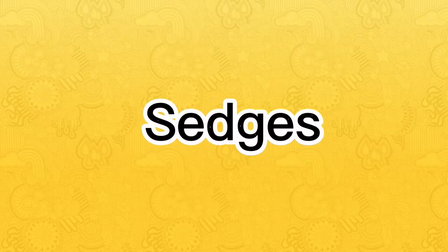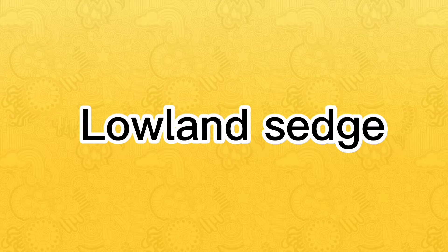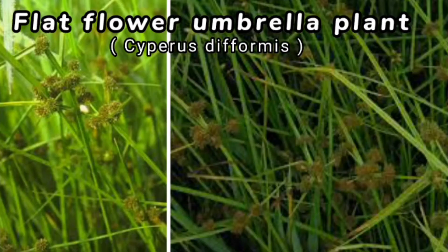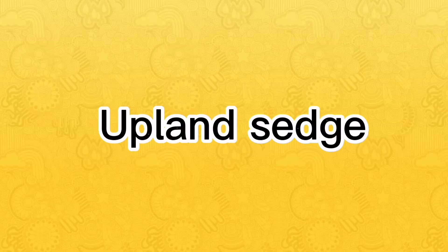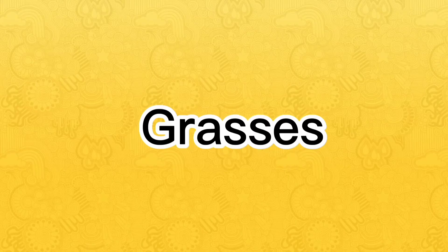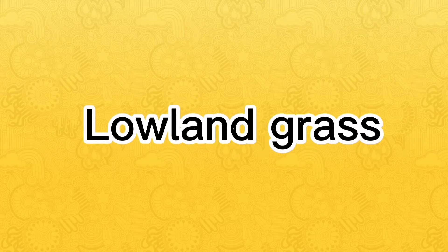For sedges: sedges that belong to lowland are Rice Flat Sedge and Flat Flower Umbrella Plant. Sedge that belongs to upland is Purple Nut Sedge.